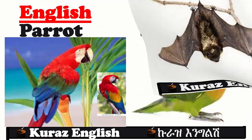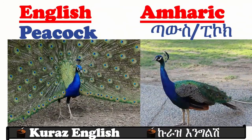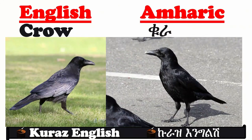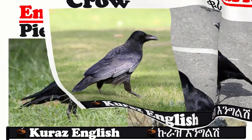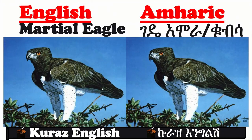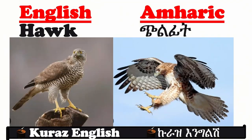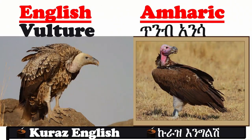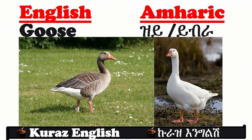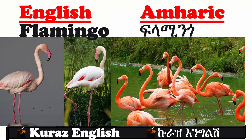Bat. Parrot. Owl. Peacock. Ostrich. Crow. Pied Crow. Eagle. Martial Eagle. Falcon. Hawk. Vulture. Duck. Goose. Swan. Flamingo.